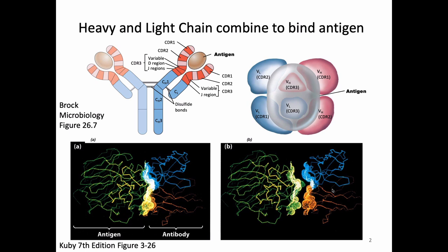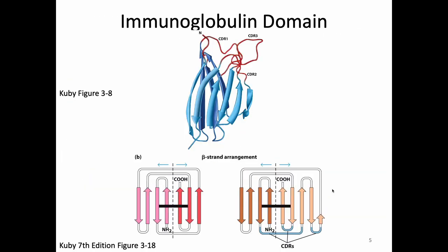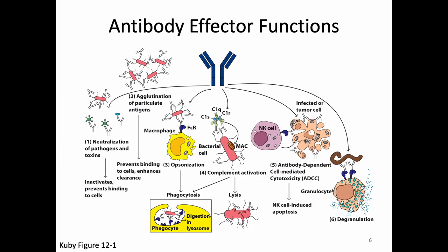All of the information so far has had to do with how we bind antigen with our antibody. But we also need to think about how our antibody actually gets rid of a microbe. People often think of antibodies as amazing superheroes, but they're just proteins. So now we need to talk about the antibody effector functions — what antibodies can do in order to destroy microbes.